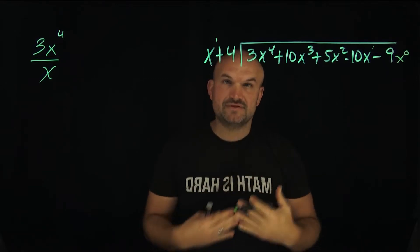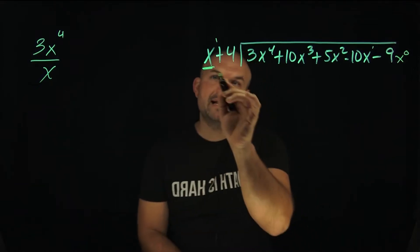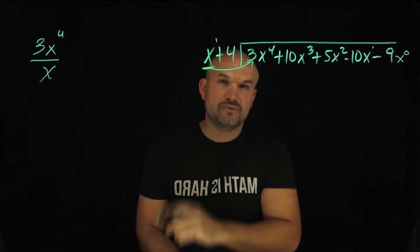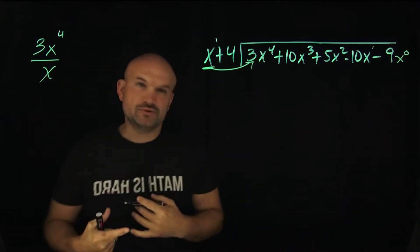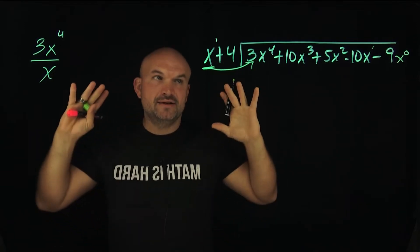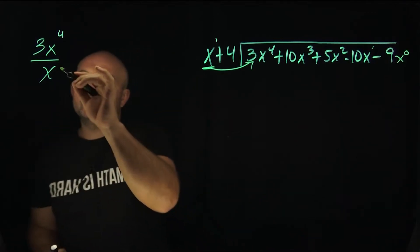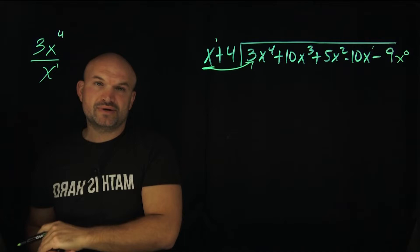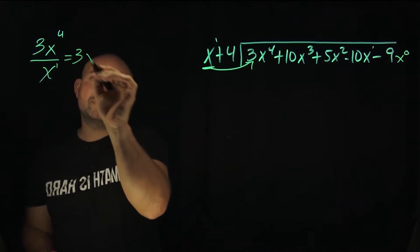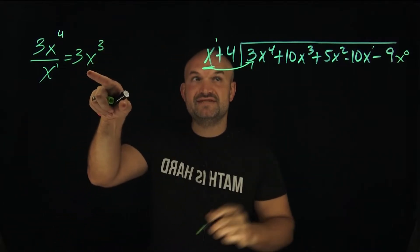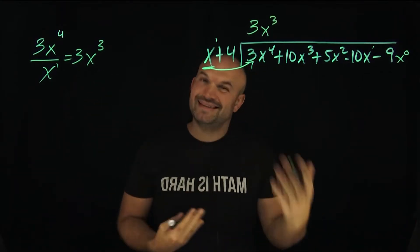We're always going to start with the leading term of our divisor and ask: how many times does x divide into 3x to the 4th? A lot of times teachers do this in their head so fast you can't follow, so I'm going to do it nice and slow. Using the rules of exponents, x to the 1st divides into 3x to the 4th to give us 3x cubed. We place that right up here — that is our first value of our quotient.